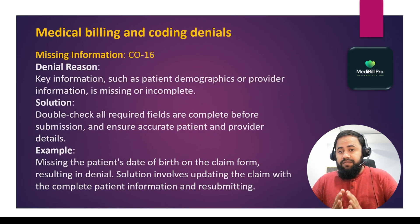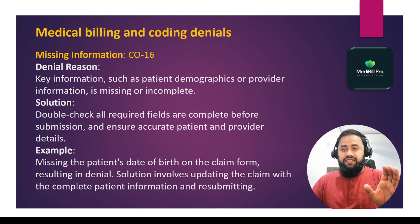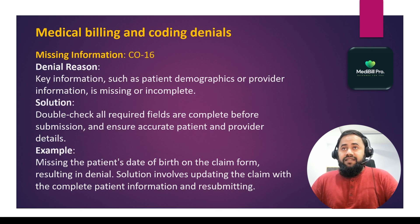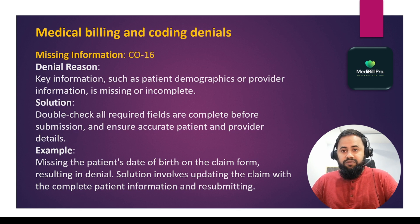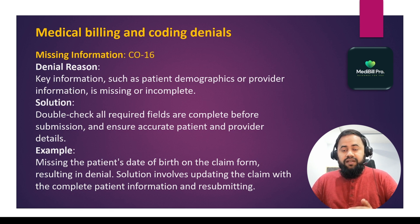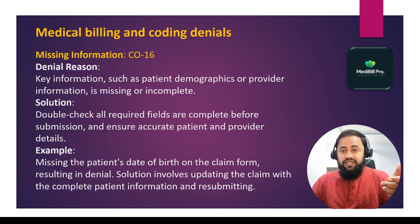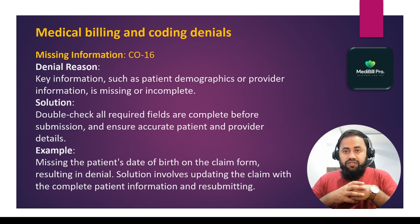The second denial is missing information, which also uses reason code CO16. Key information such as the patient's demographics or provider information is missing or incomplete. This includes the patient's name, address, date of birth, first name, last name, or middle name, as well as the policy number. If any of this information is incorrect, the insurance can deny the claim with CO16.